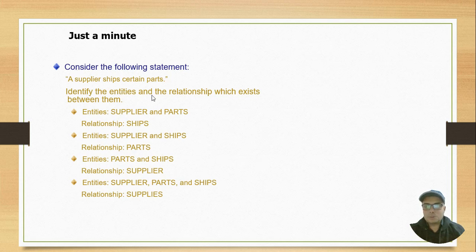Just a minute. This is a question for you guys: A supplier ships certain parts. Identify the entities and the relationship which exists between them.